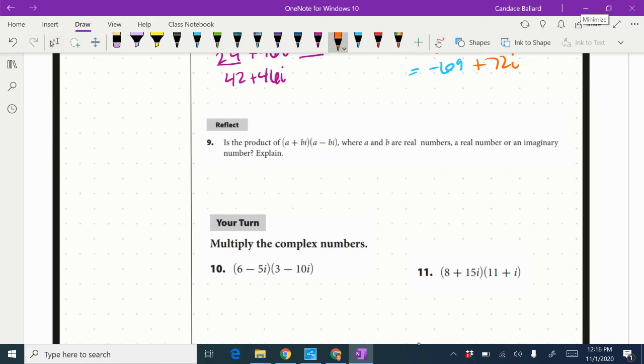So let's go ahead and FOIL that out just like we would anything else. So a times a is a squared. A times negative bi would be negative abi. Bi times a would be positive abi. And bi times negative bi would be negative b squared i squared.